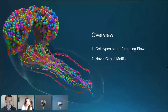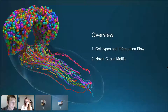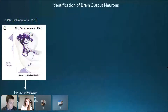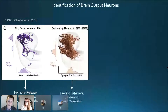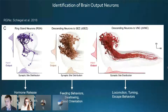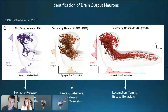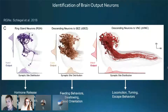We've already identified all input neurons into the brain, so the next thing we wanted to do is identify output neurons. Michael Pankratz's group has identified one type of output neuron called the ring gland neuron, which is responsible for hormone release — you can think of this as the pituitary gland. We've also identified and reconstructed all descending neurons to the brainstem equivalent and the spinal cord equivalent. These neurons are responsible for sending behavioral instructions to the rest of the nervous system, controlling behaviors including feeding, swallowing, orientation, navigation, locomotion, and nociceptive behaviors.